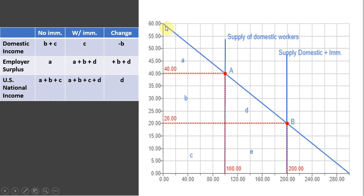Employer surplus, the difference between the height of the demand curve up to the market wage, all the way over to the last worker hired. We now have area A, B, and D representing employer surplus or producer surplus. So total U.S. national income now is slightly higher. How much is it higher by? By area D.